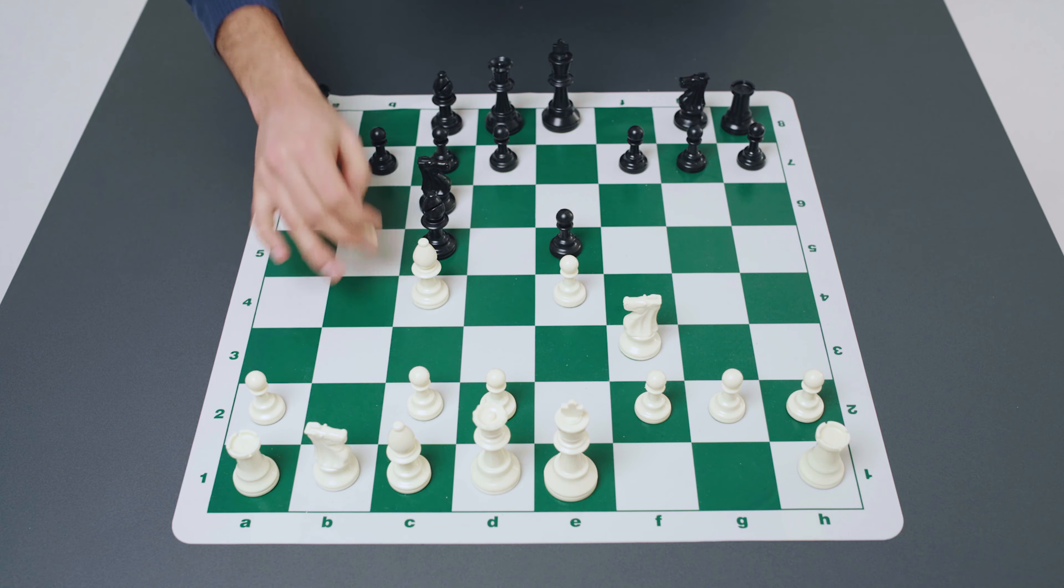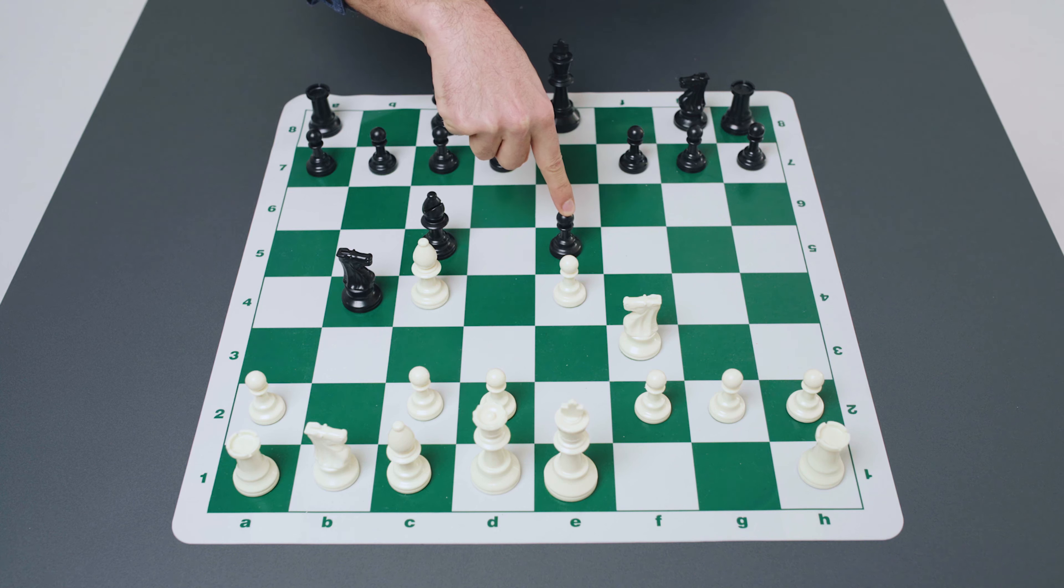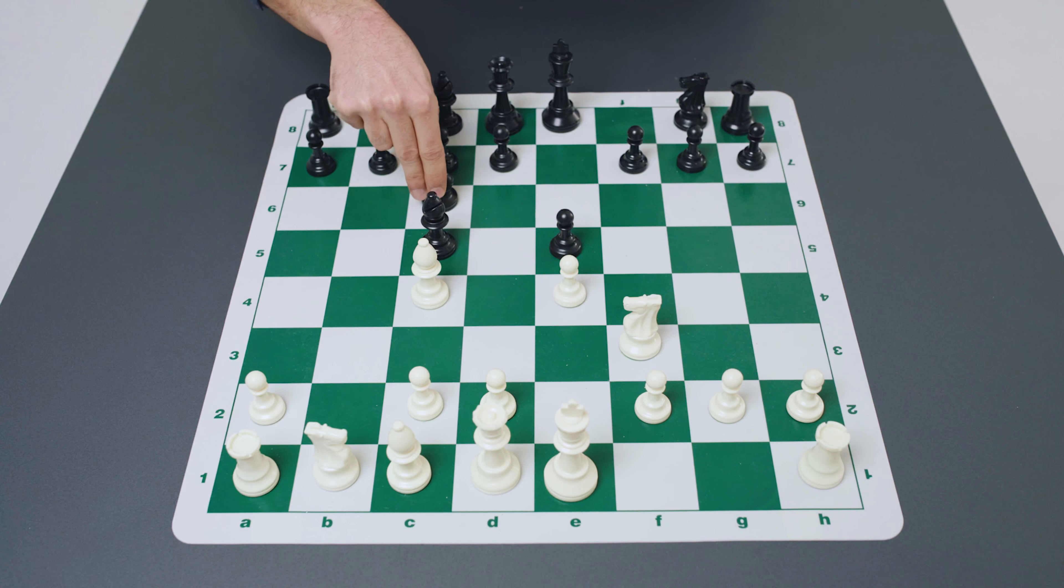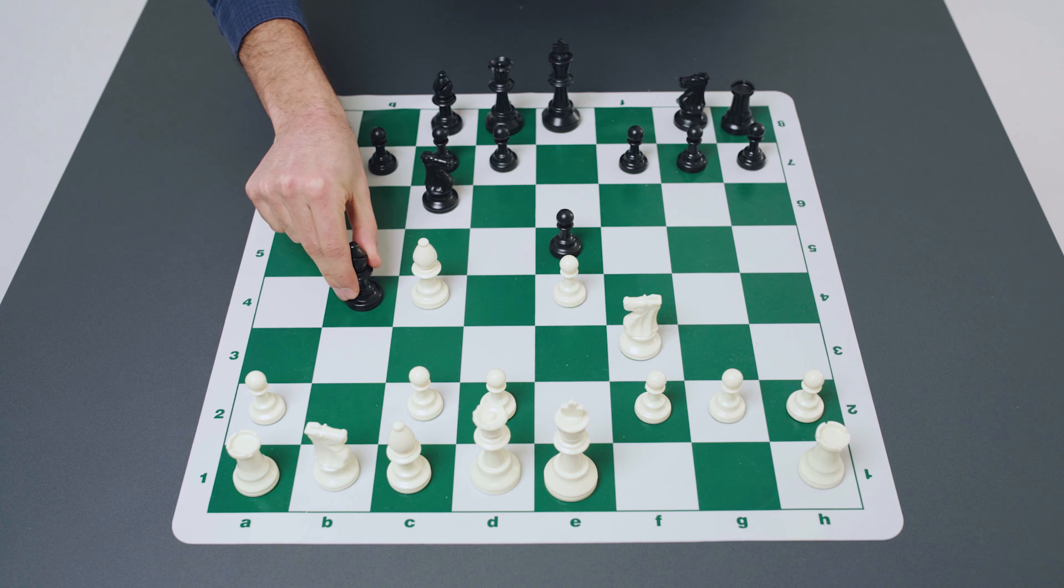So instead white rather than pushing the pawn to d4 started to simply defend the pawn on e4 with the move pawn to d3 and this sets up more giuoco pianissimo positions, the very quiet game positions.